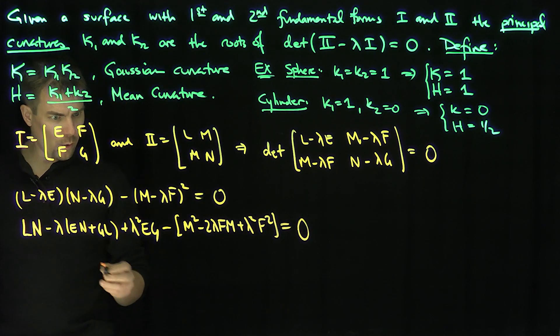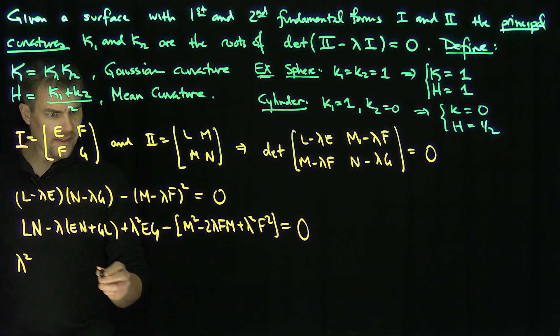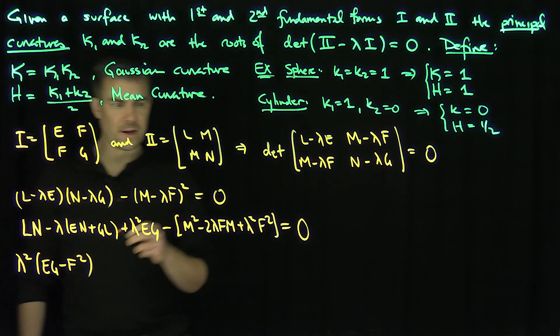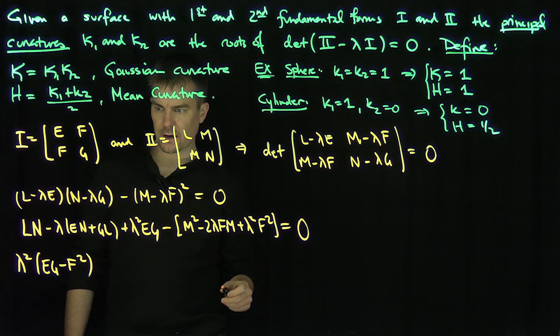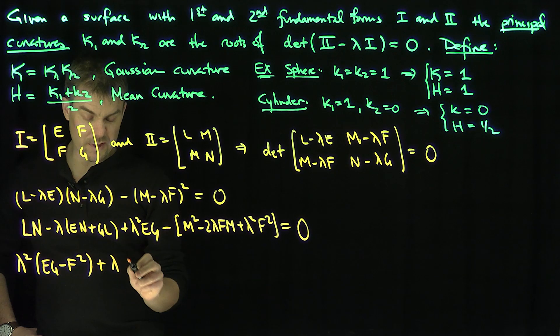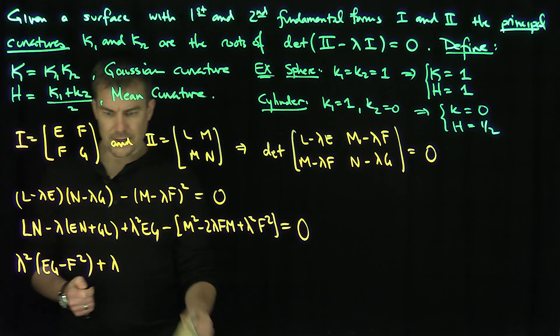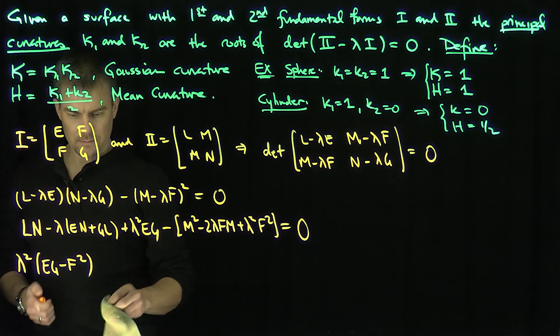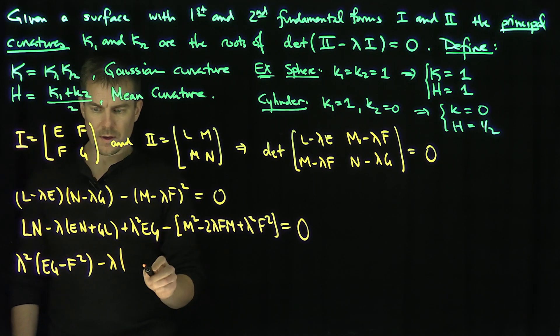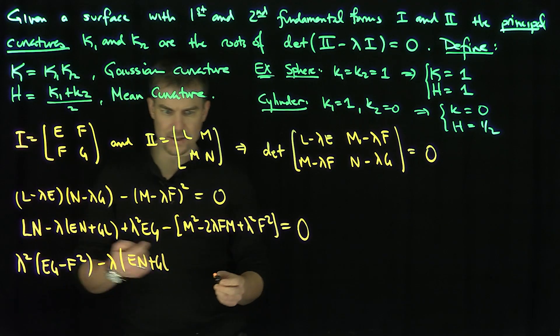So our coefficient of lambda squared is going to be lambda squared. And then we're going to have an E G minus F squared. What's my lambda coefficient going to be? So let's do this carefully. So we're going to have a, let's do a plus lambda. Actually, we really need a minus actually. Let's do minus lambda. What's the coefficient of lambda? Well, we'll have an E N plus GL, like that. There's one minus lambda.